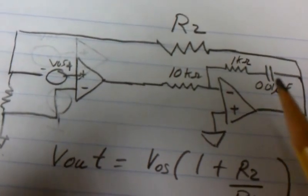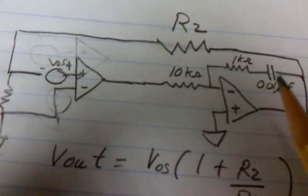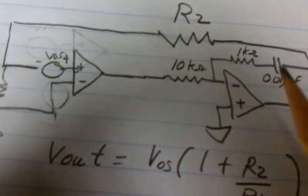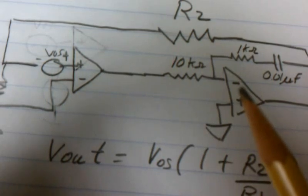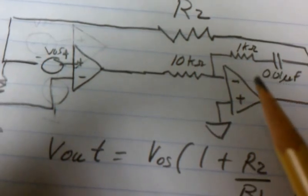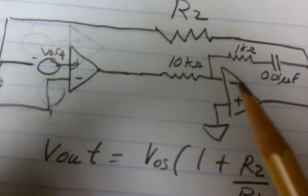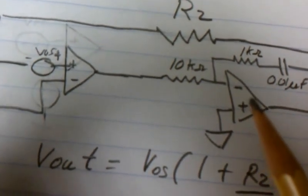This op amp has a capacitor that makes this look open at DC. And so minus R2 over R1 would effectively be infinite. And so we get a multiplication of our open loop gain at DC.